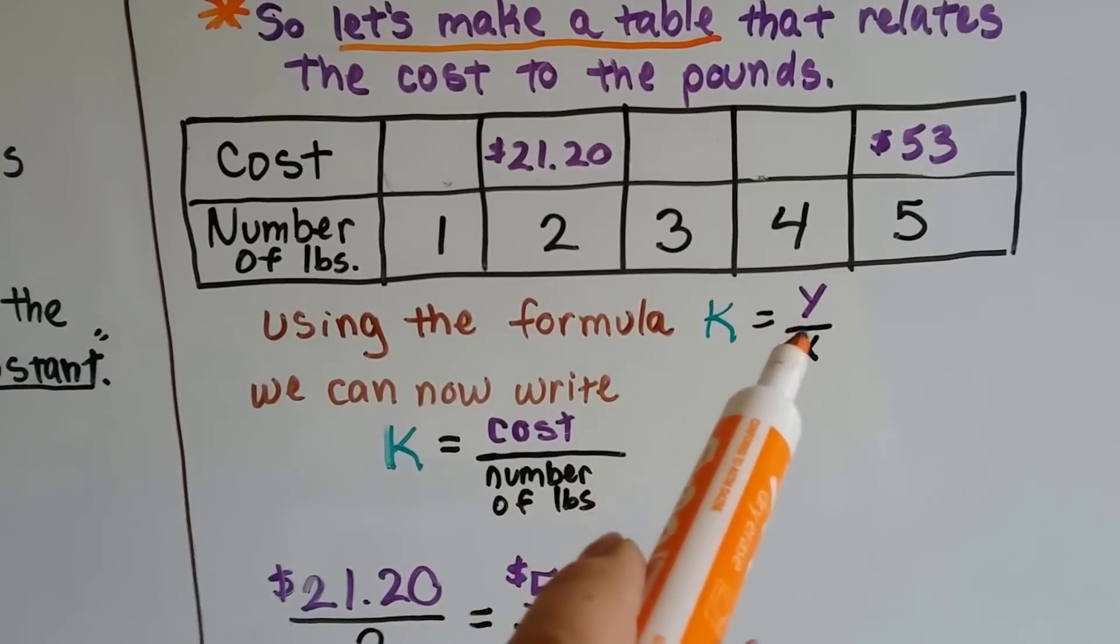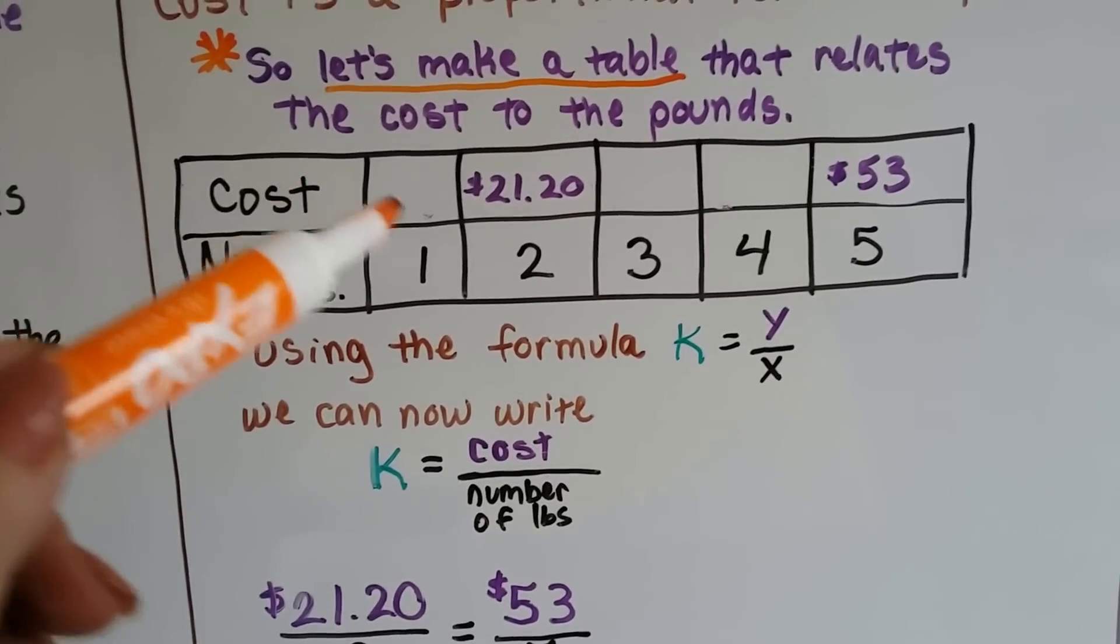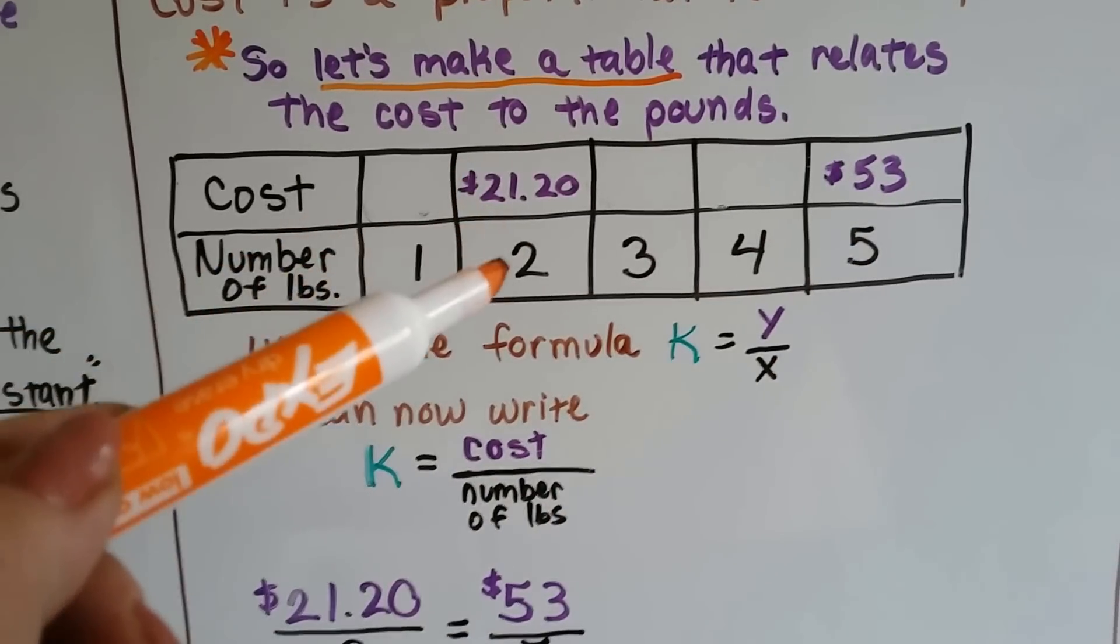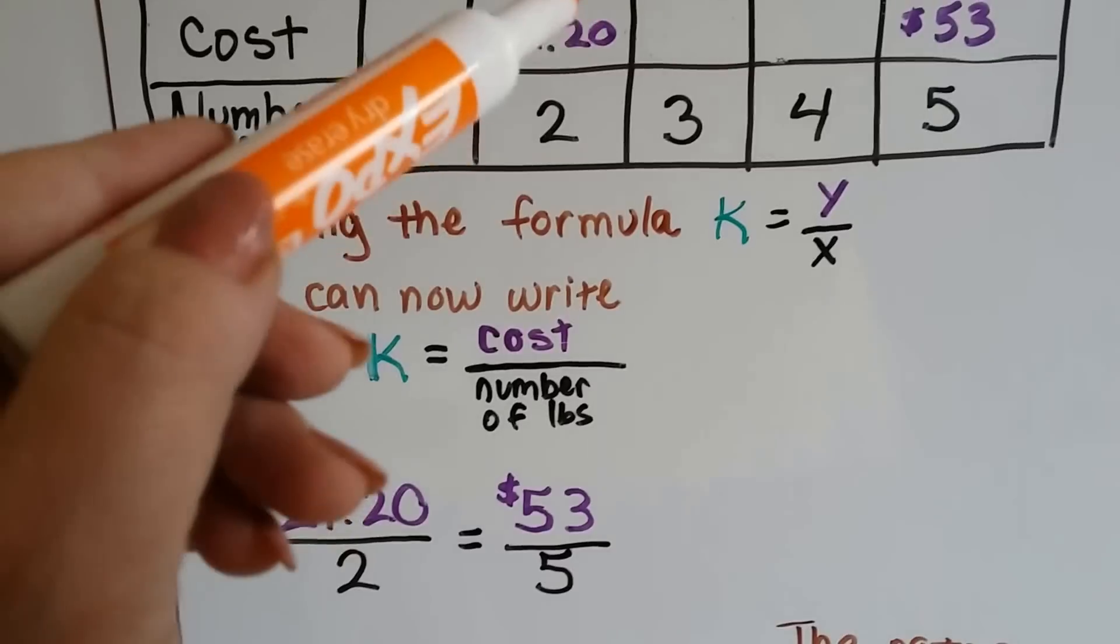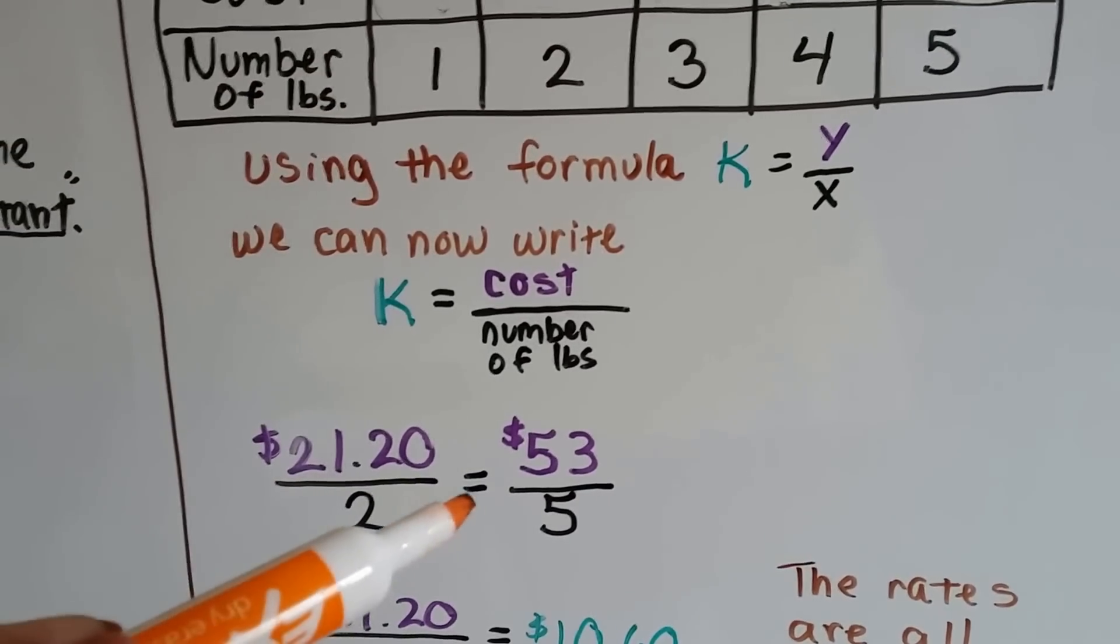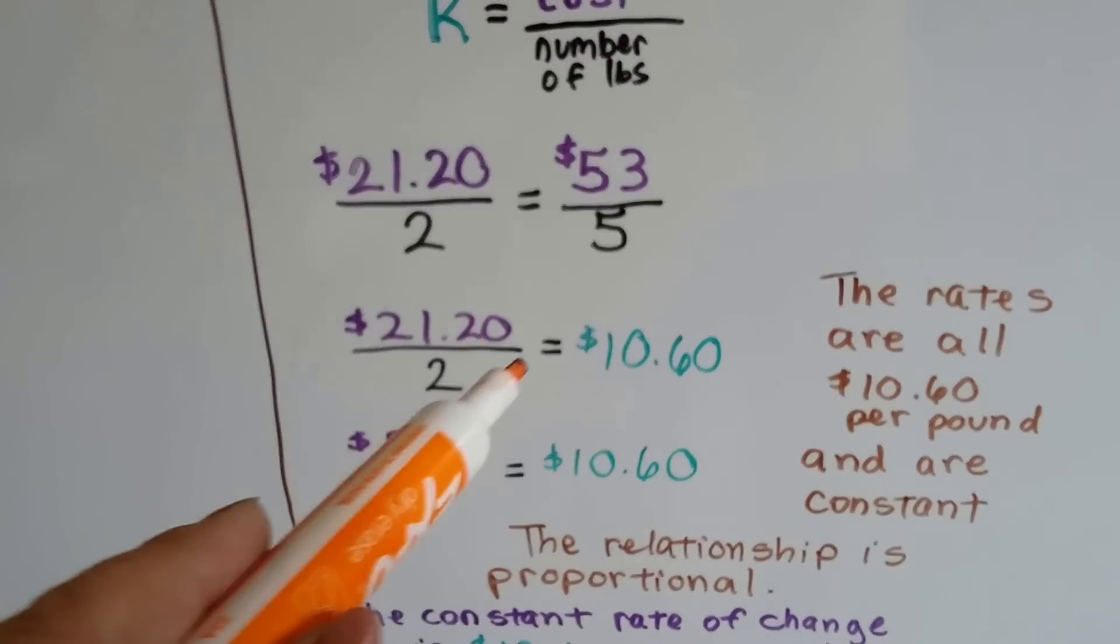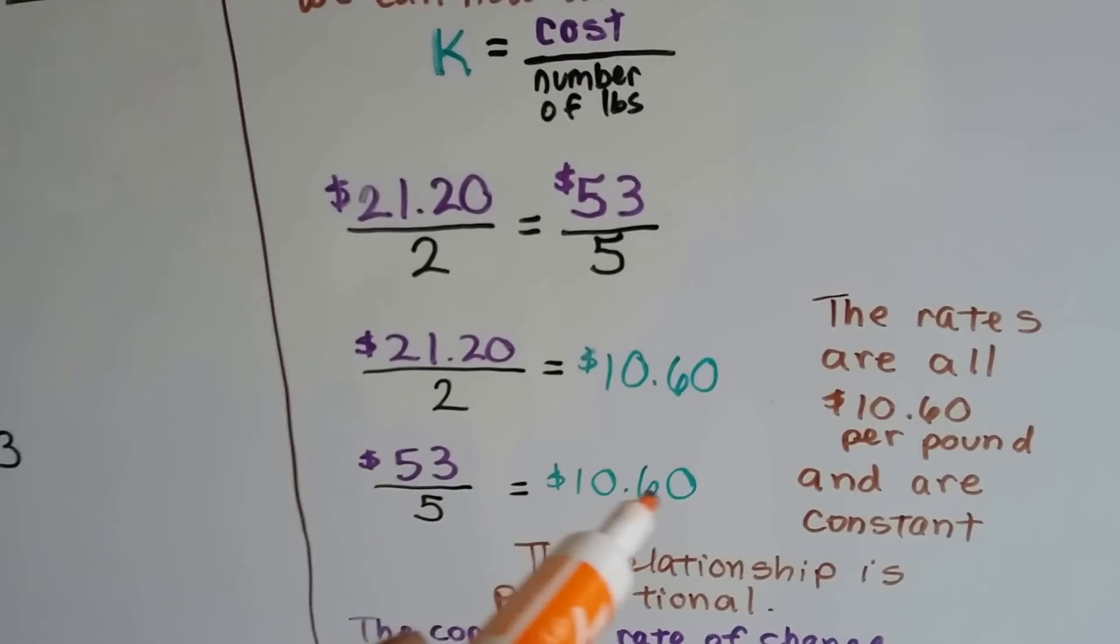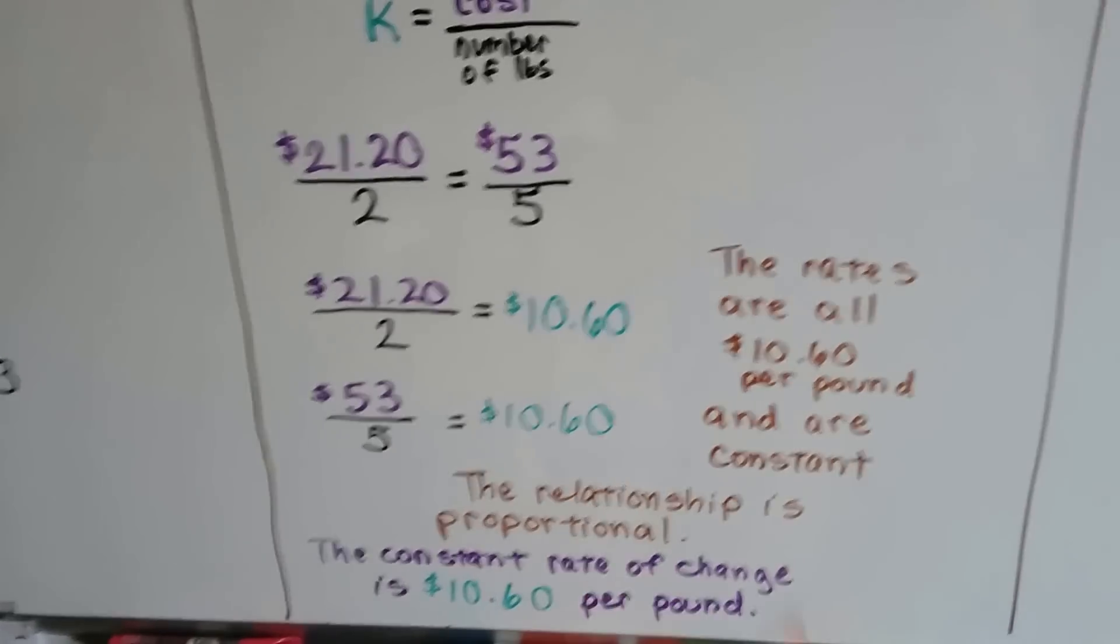We're going to use this formula, K equals y divided by x. In order to find this rate of change for each pound, we need to divide the $21.20 by 2 or the $53 by 5. It's the cost over the number of pounds. And $21.20 over 2 should equal 53 over 5 if there's a constant rate of change. We do the $21 over 2 and we find out that it's $10.60. Then we divide 53 by 5 and find out that it's $10.60.